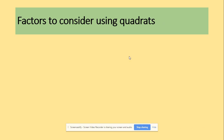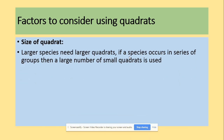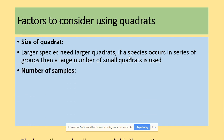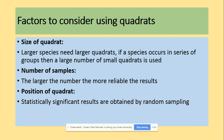Factors to consider when using quadrats — these could come up as exam questions. First, the size of the quadrat: larger species need larger quadrats. Second, the number of species: the larger the number, the more reliable the results. Third, the position of the quadrat: statistically significant results are obtained by random sampling, using a random number generator, calculator, or table to generate random coordinates.